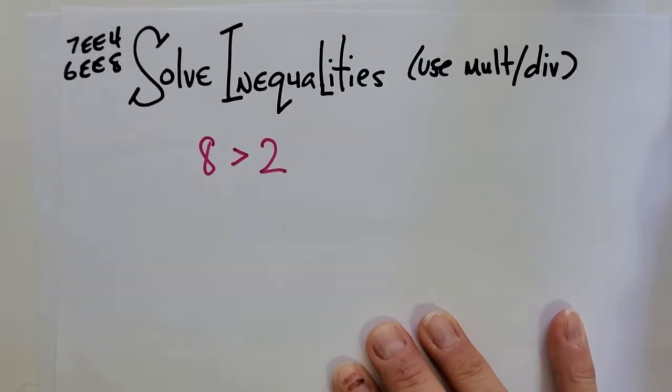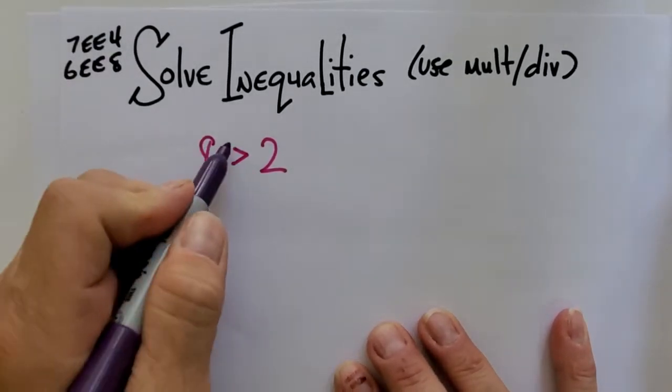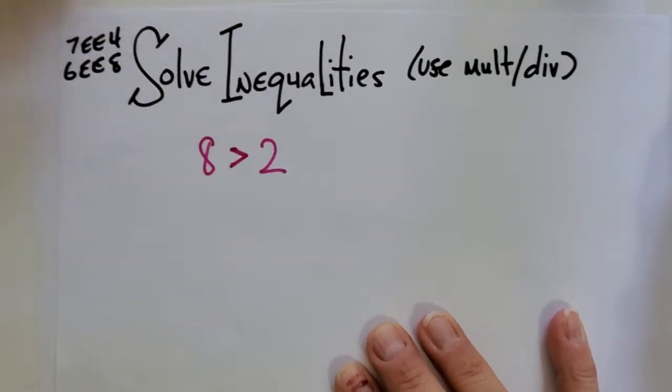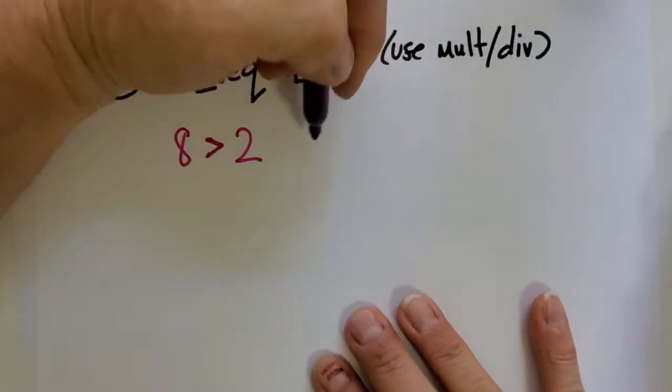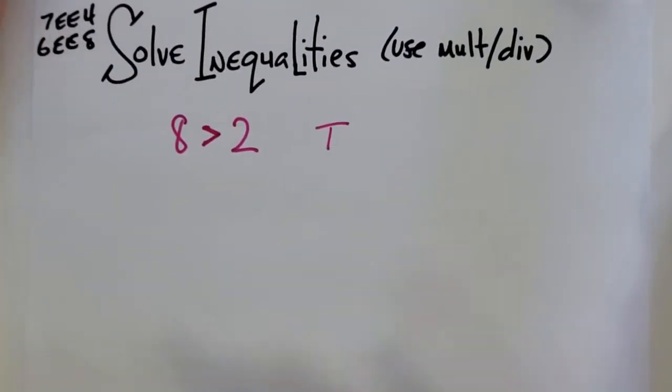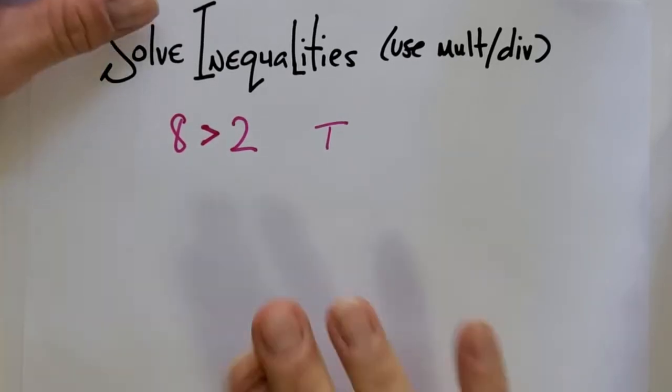Let's take a look at this. I'm going to write an inequality. 8 > 2. There's your inequality. Is it true? Of course it's true. This is the statement, and it's true. I'm going to put T for true. If it ends up being false, I'll use F for false.